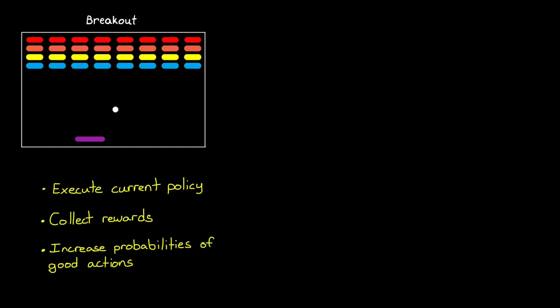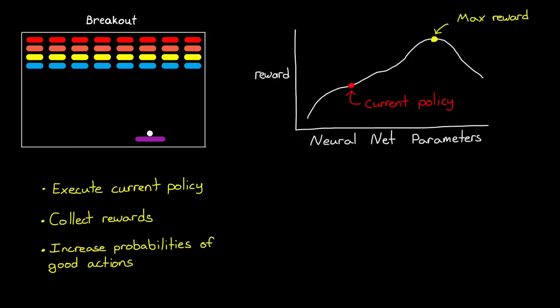Then over time, the agent will nudge these probabilities around in the direction that produces the most reward. So how does it know whether the actions were good or not? The idea is this. Execute the current policy, collect reward along the way, and update the network to increase the probabilities of actions that increase reward.